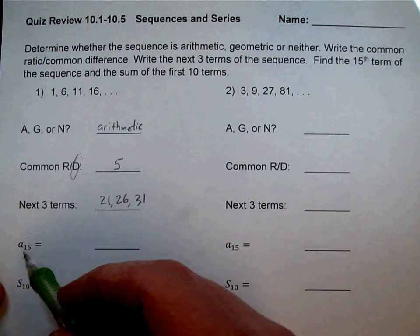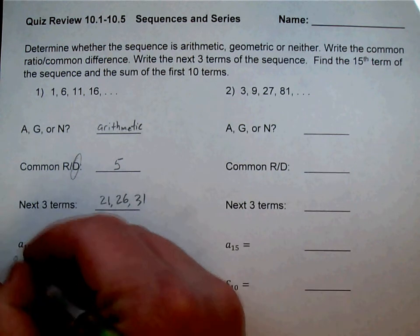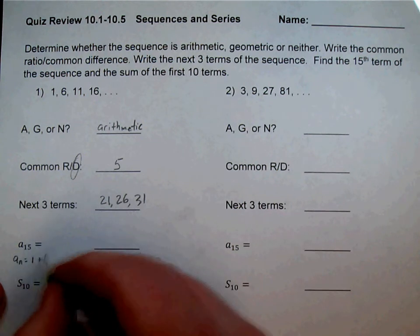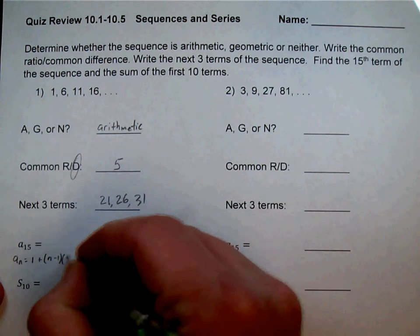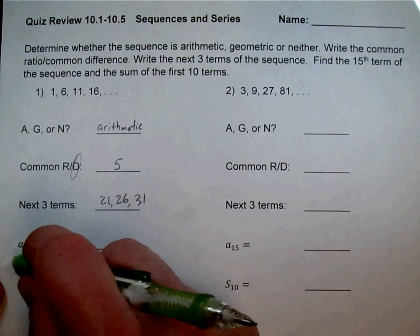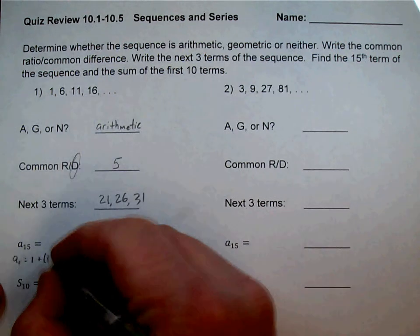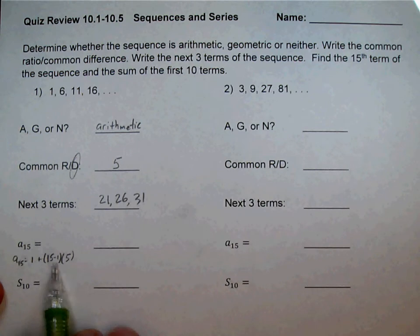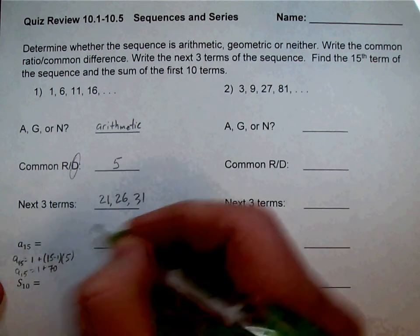For the 15th term, it's probably best to create our equation. So A sub N equals our first term, which was 1, plus N minus 1, times our D, which is 5. Because I'm looking for the 15th term, I'll plug in 15. So 15 minus 1 is 14. 14 times 5 is 70, so we have 1 plus 70, which is 71.